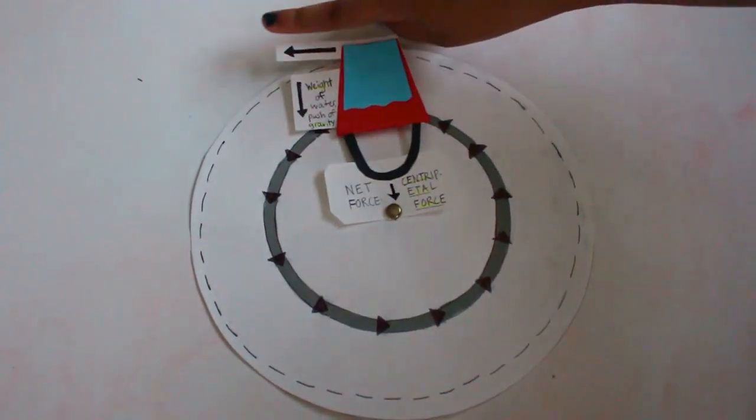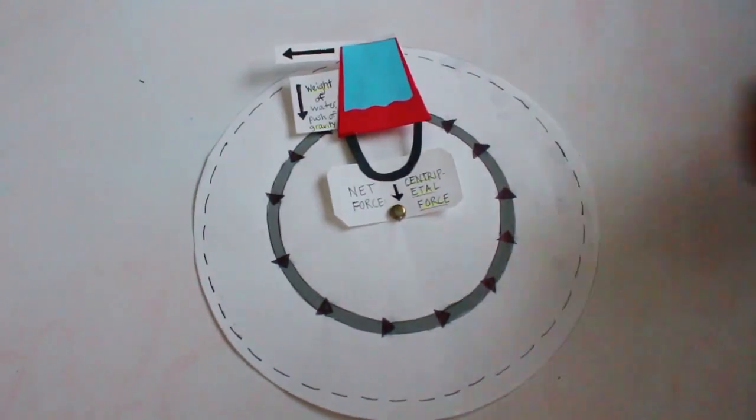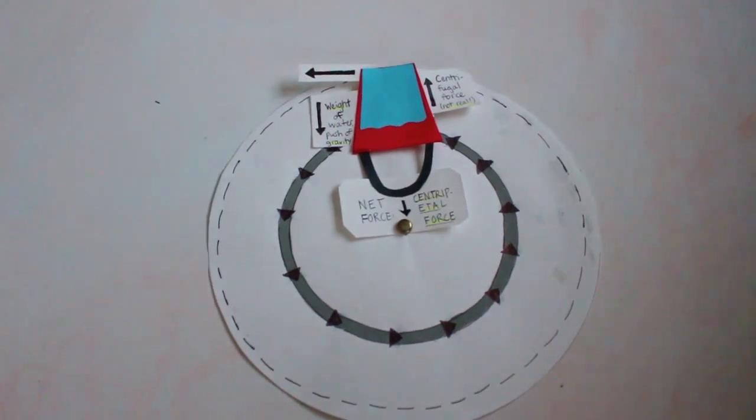The object naturally wants to travel in a straight line, but this force keeps it from doing so. There is said to be another force pushing the bucket outwards, called the centrifugal or center-flying force. However, this is not a real force.